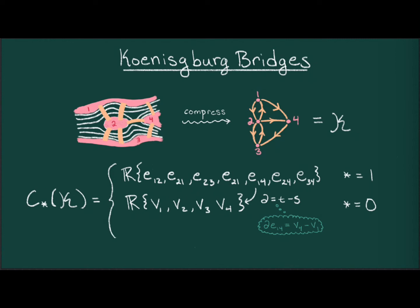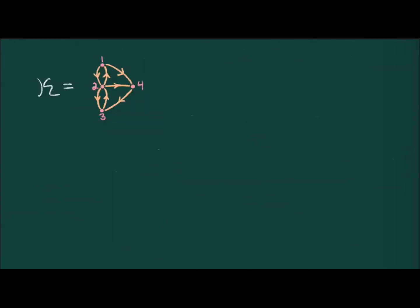and there's nothing in degrees not equal to 0 or 1. Note that, as the boundary map is linear, the boundary of minus an edge is the source of the edge minus the target of the edge. In other words, the source of minus e is the target of e, and the target of minus e is the source of e. Heuristically, one should think that minus e is e, but in the opposite direction.